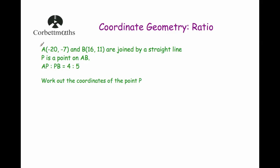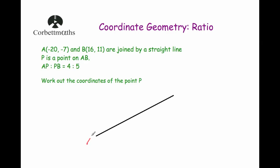Our next example: A is the point (−20, −7) and B is the point (16, 11), joined by a straight line. P is on AB and the ratio of AP to PB is 4 to 5. We need to work out the coordinates of point P. The first thing I'd do is a sketch — going from (−20, −7) up to (16, 11). P is slightly closer to A than to B.